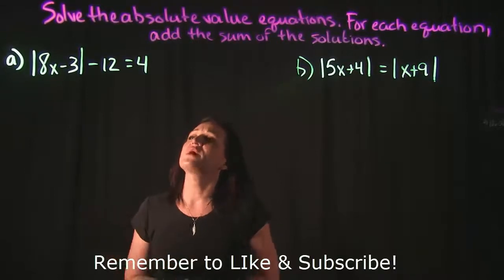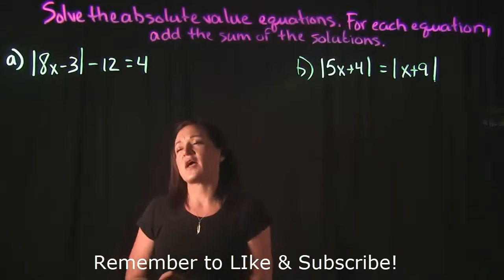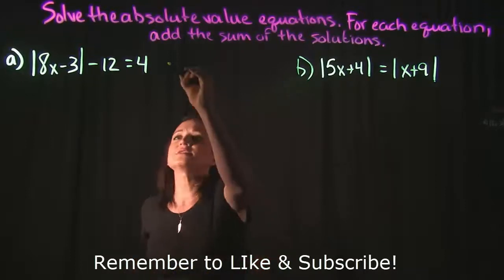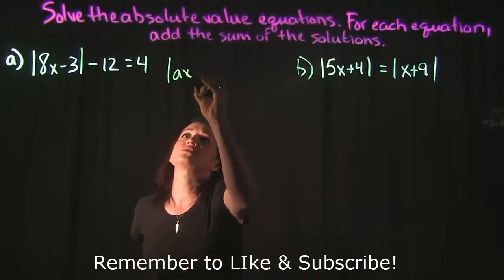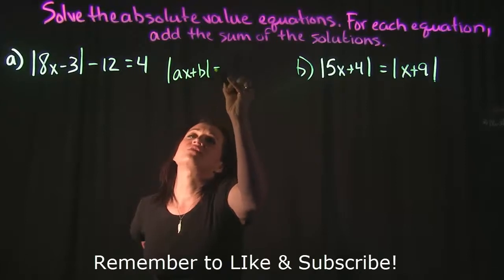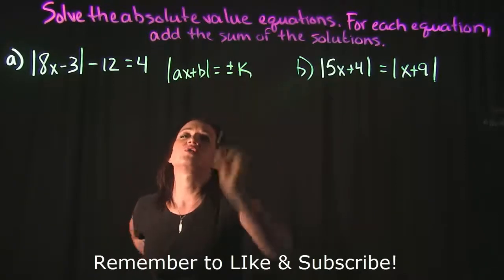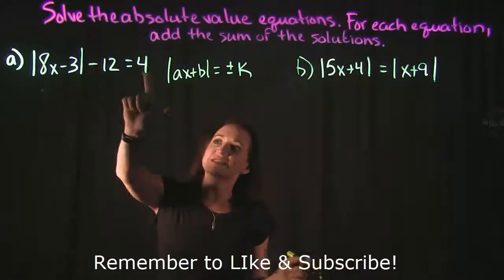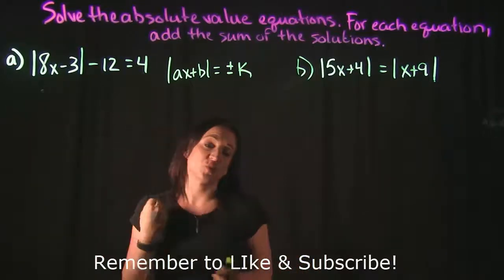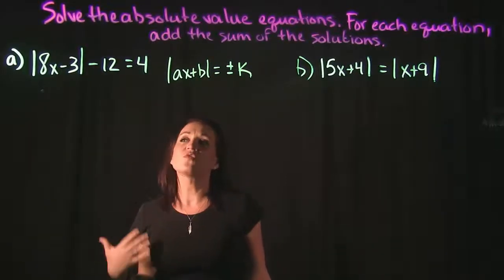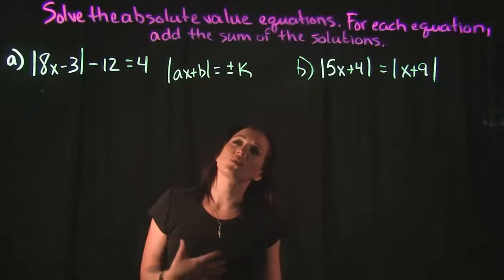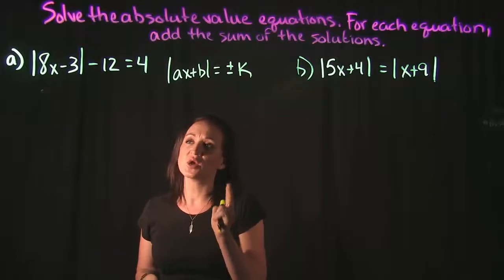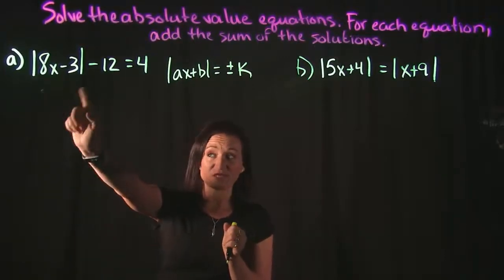For example A, we have the absolute value of 8x minus 3, minus 12, is equal to 4. This coincides with an absolute value equation set up in the form where you have an absolute value on one side of the equation set equal to a constant. The rule for this tells us we're going to create two equations based off of this one.